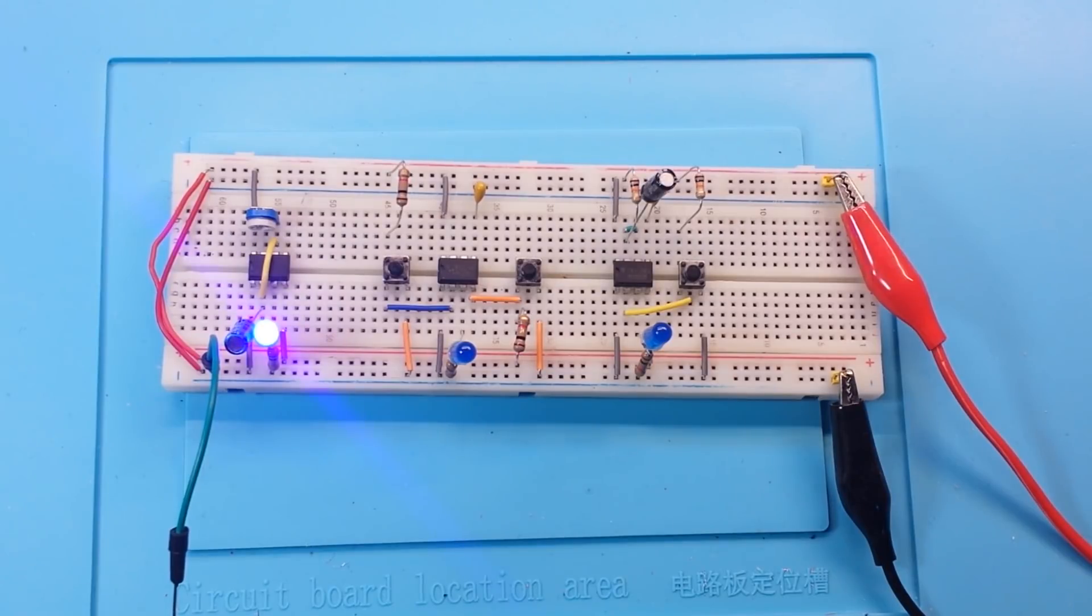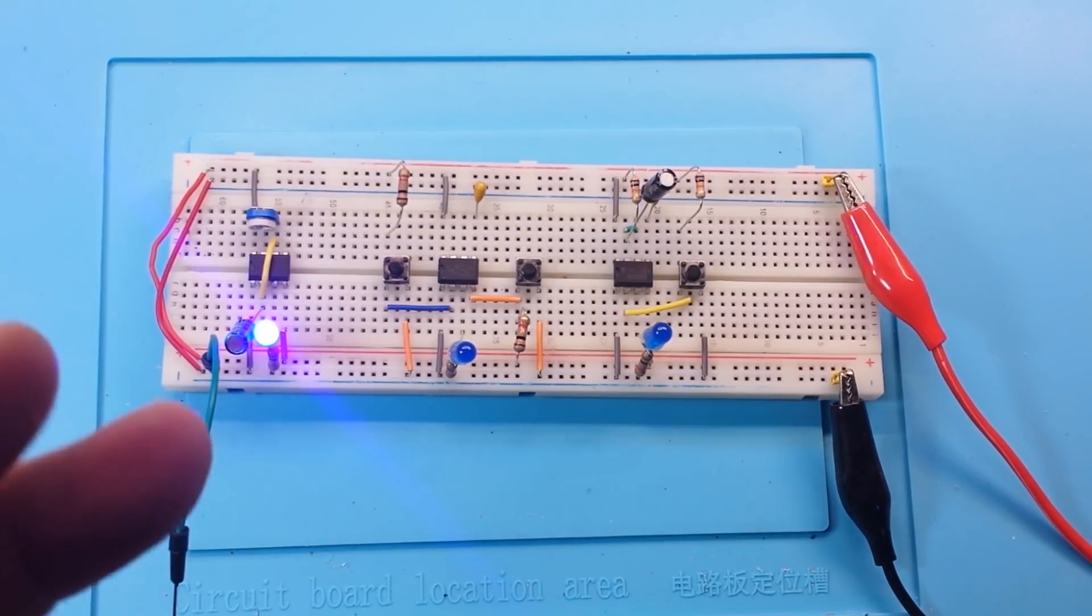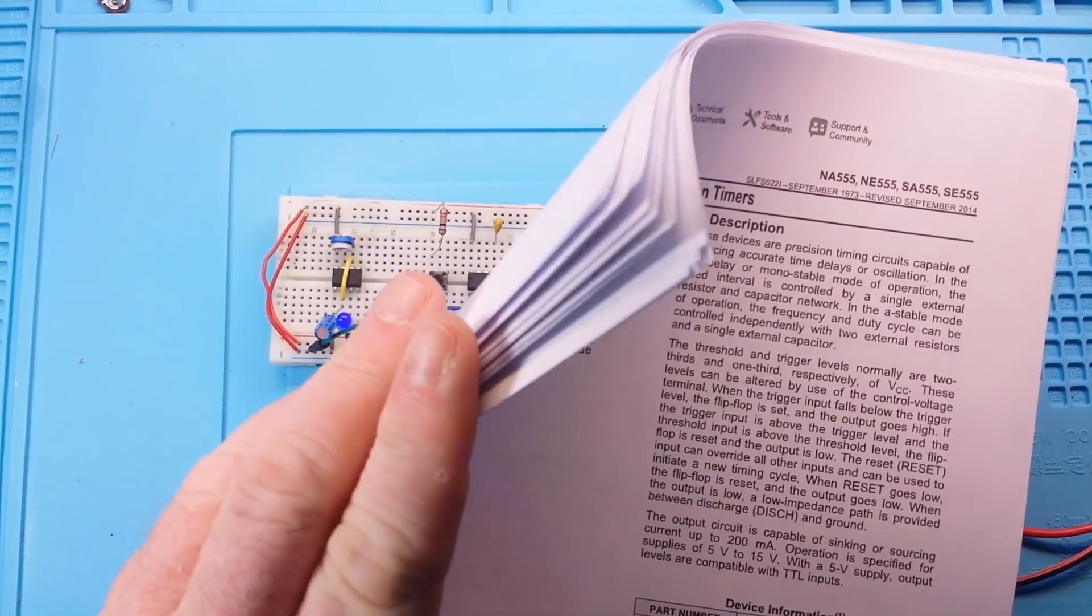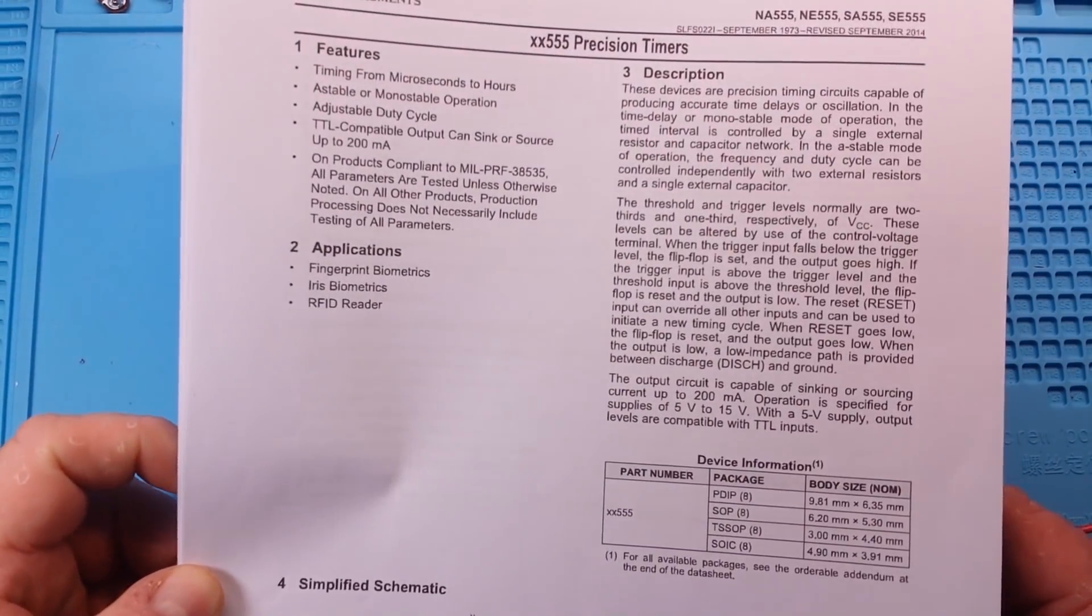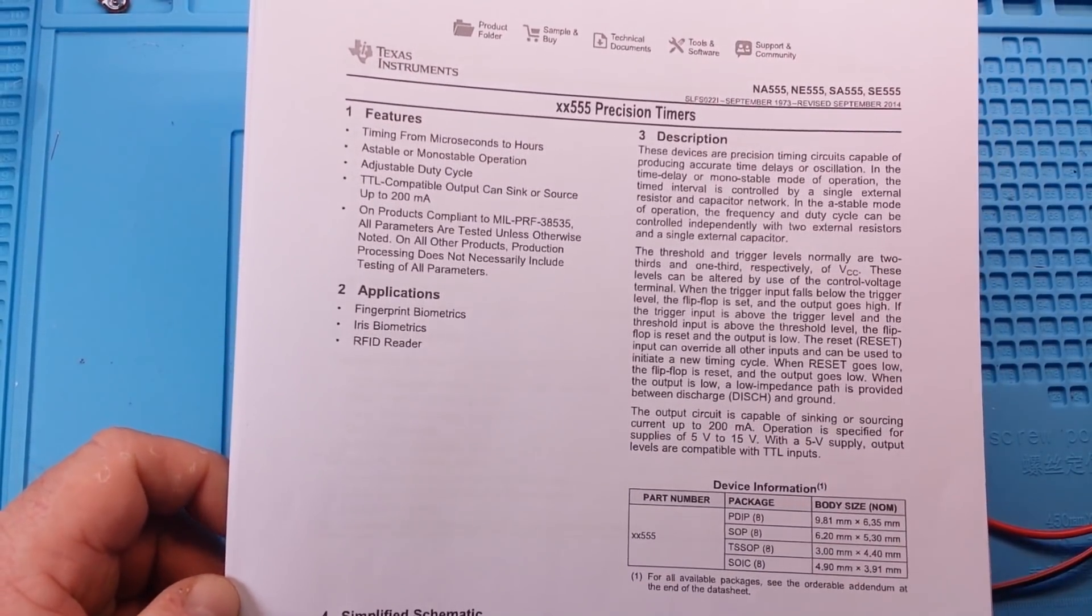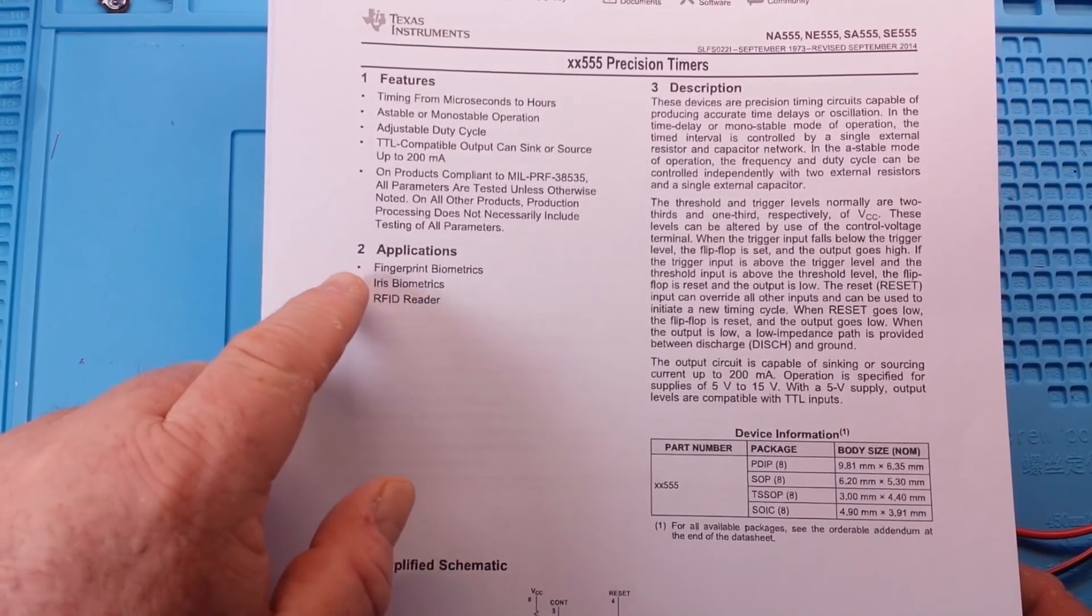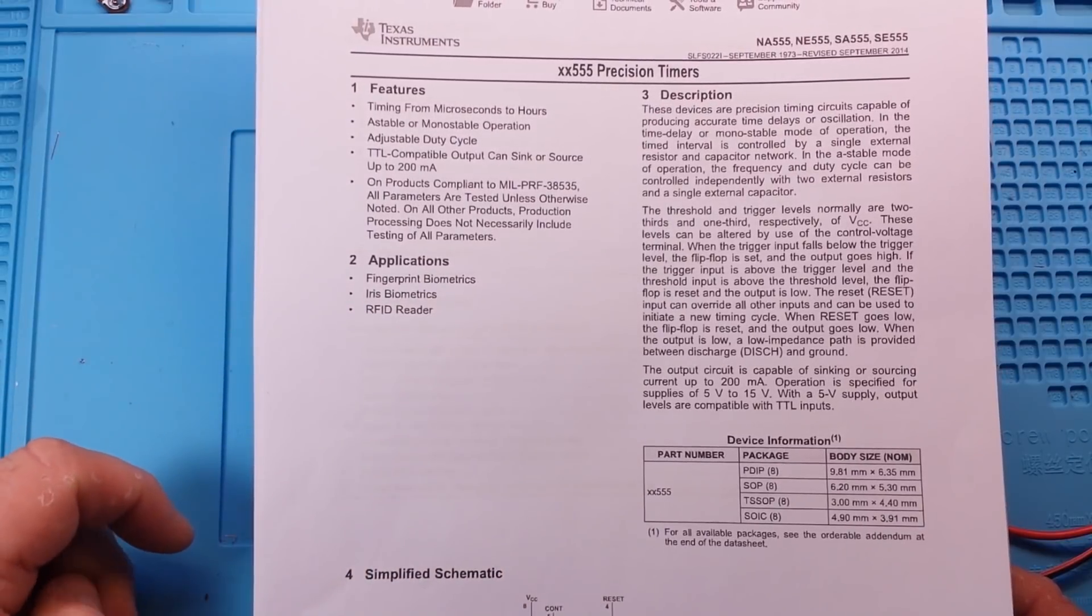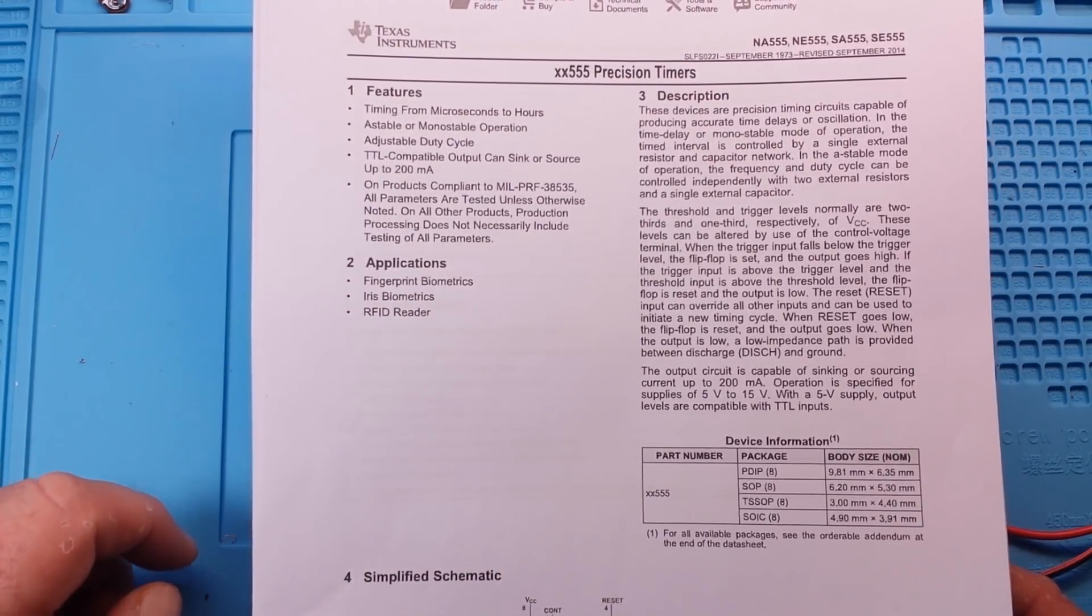One of the most incredible ICs ever created, and this is probably going to be my last video on it. I've talked about it a number of times in a number of videos. So unless somebody has something specific they want me to cover, I think we've just about got it all. Here's the datasheet for the 555 timer, and it is about 30 pages long. I mean, it's incredible. There's so much going on here. I like their applications: Fingerprint Biometrics, Iris Biometrics, RFID Reader. Really? That's all you could come up with?